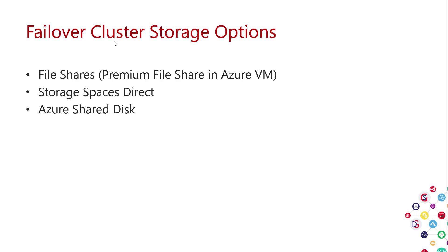Azure Shared Disks are disks within the Azure VM infrastructure that can be connected to more than one VM. They coordinate with Windows Failover Clustering and look just like a physically shared disk — they can attach to one node or the other, obeying SCSI reservations which clustering uses to get exclusive access to the disk.